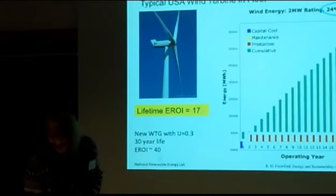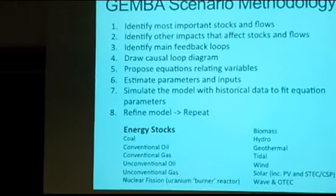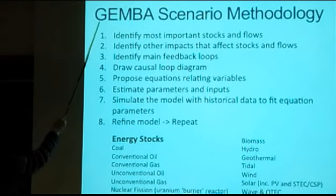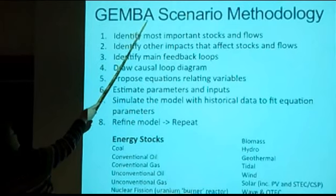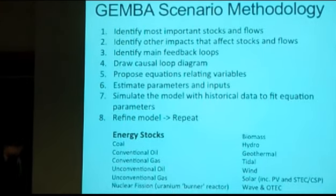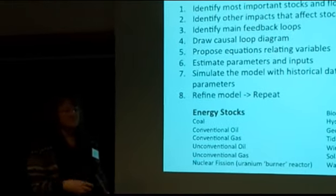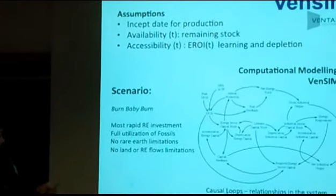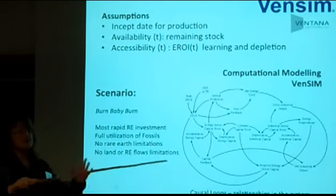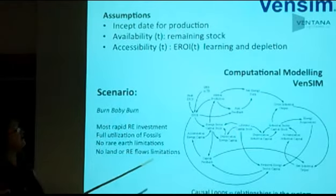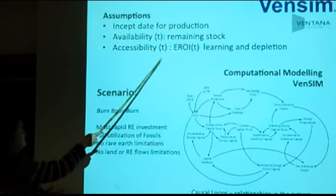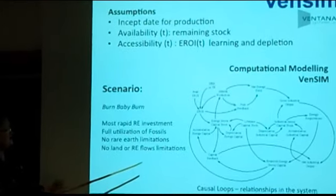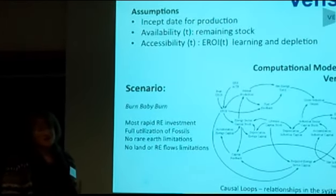Unless we hit some other depletion effect — like steel requiring a lot more coal to make as ore grades decline — wind EROI could continue to rise. The GEMBA scenario — Global Energy Model Biophysical Approach — takes EROI into account and connects all those things together in stocks and flows. Assumptions needed: an inception date, fitting the model to historical data to get the parameters of the EROI function, knowing where we are when we start, and having a good model of what the EROI is.